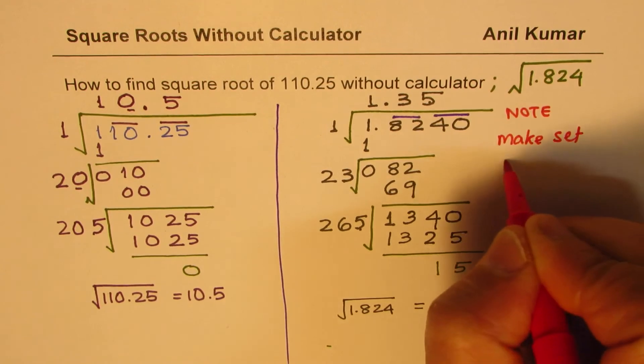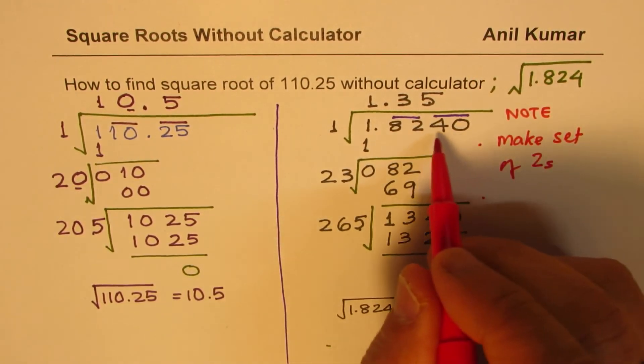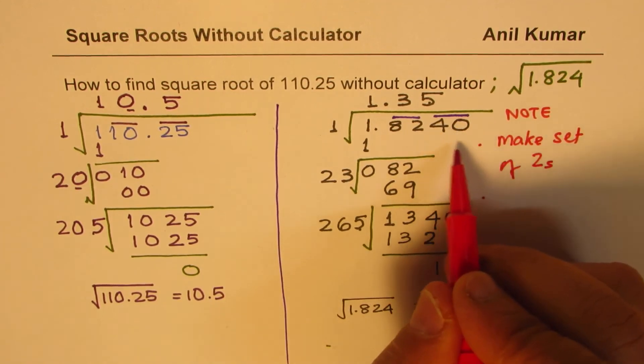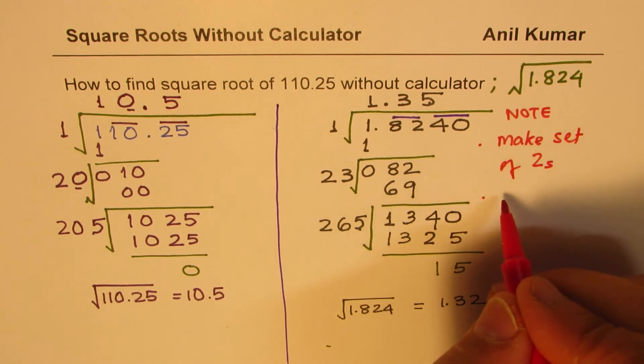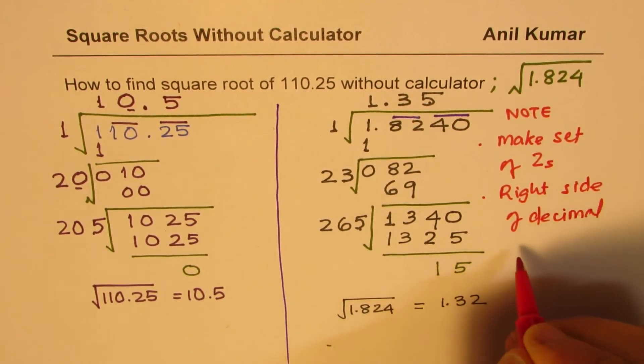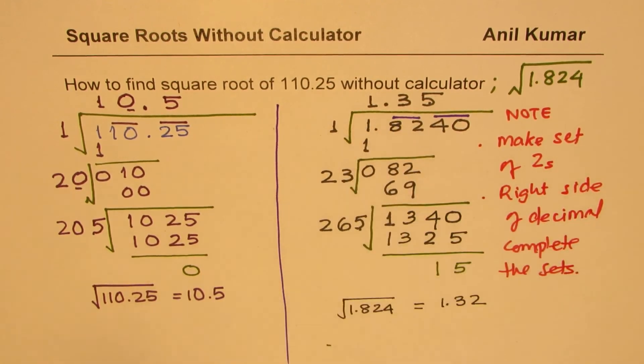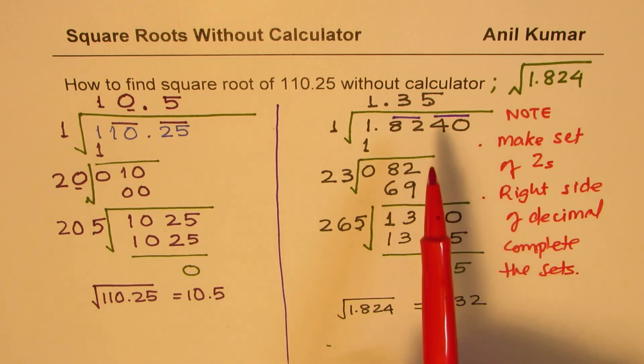So when you make set of 2s, on the right side after decimal, we have to bring two numbers together down. Make set of 2s. So on the right side of decimal, complete the sets. On the left side, it is not necessary. It should not be done. So that is a big change.